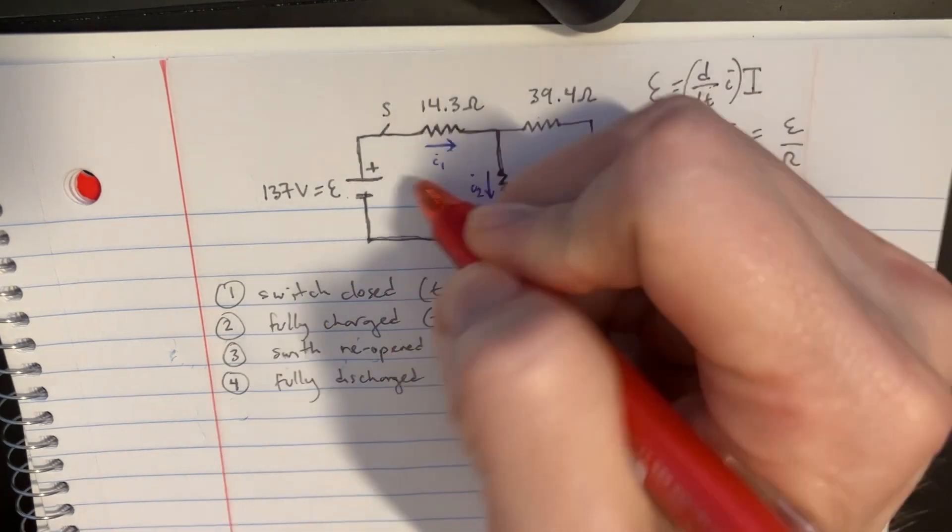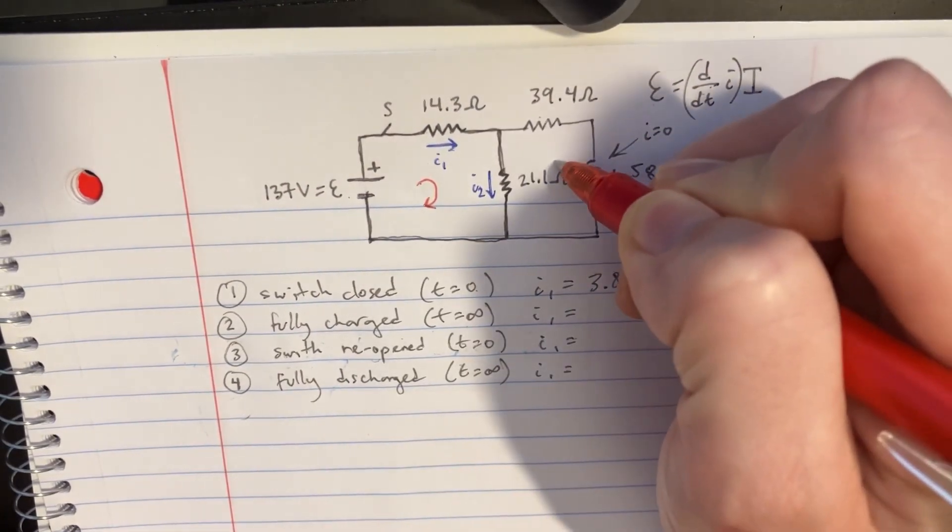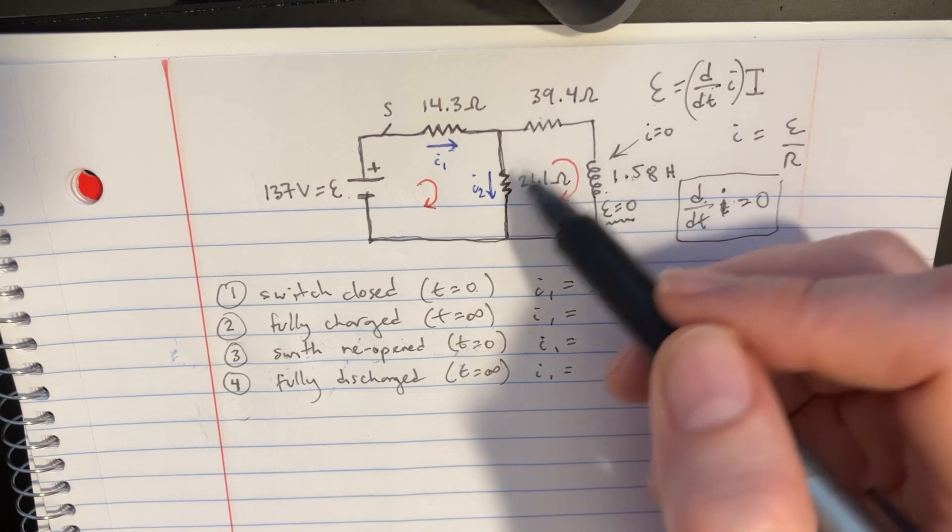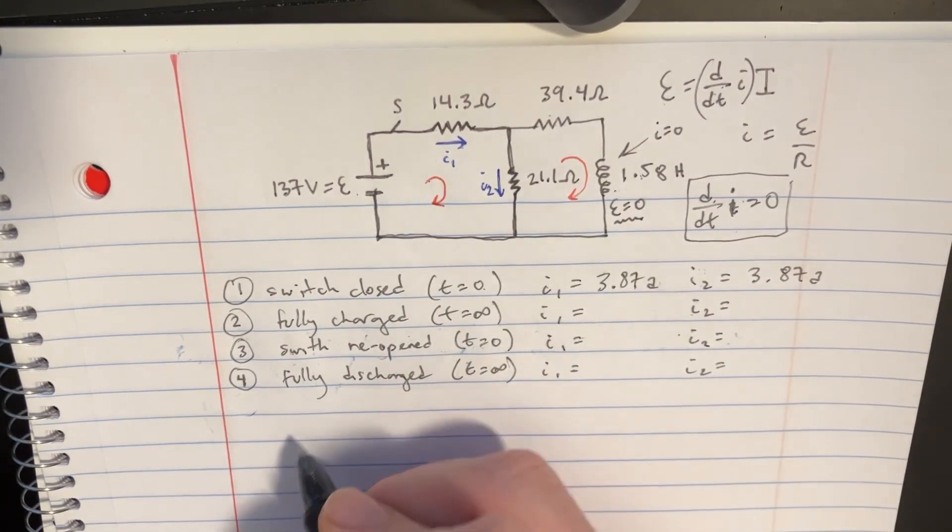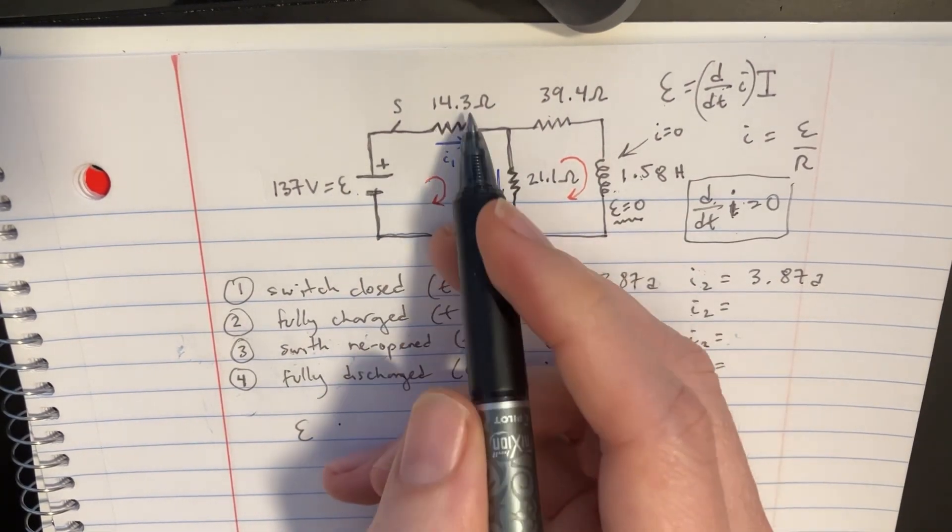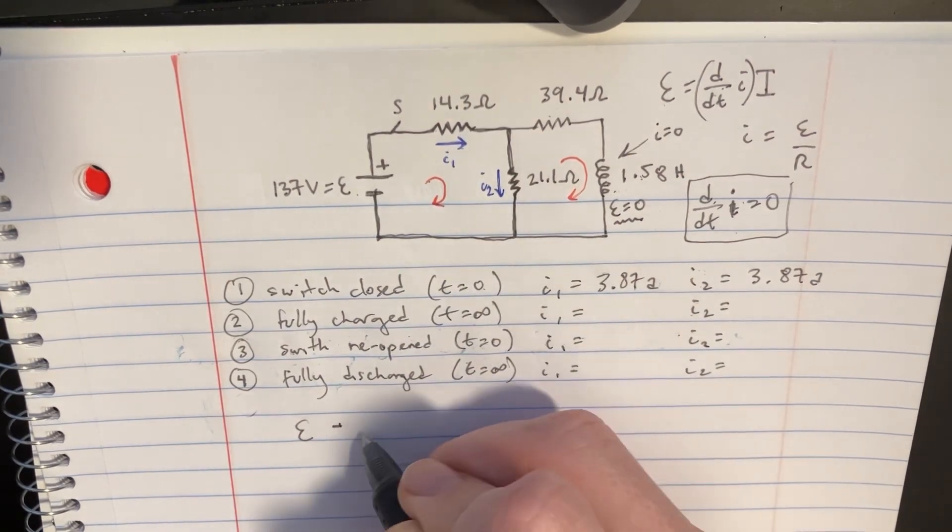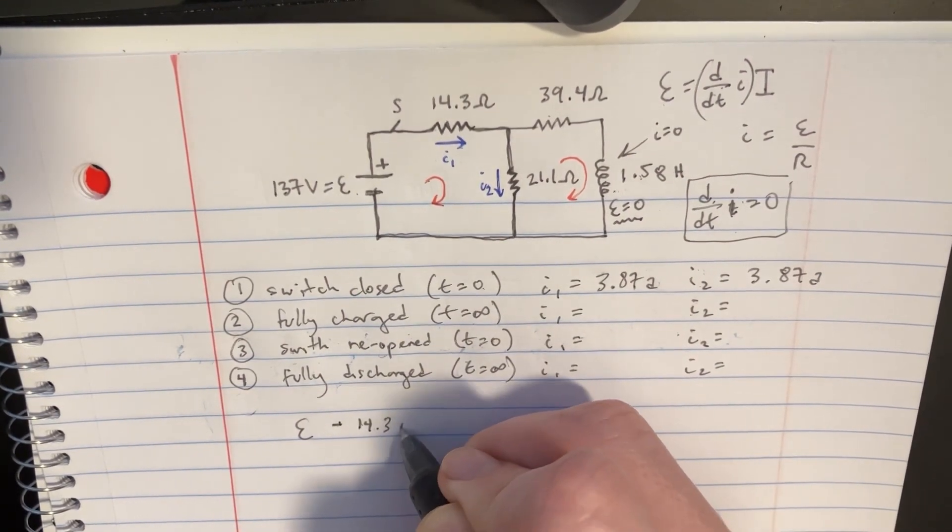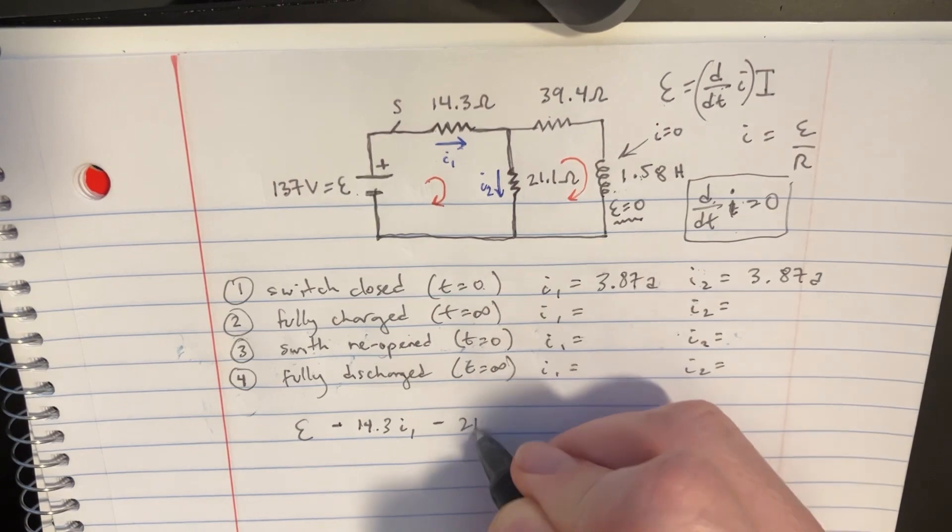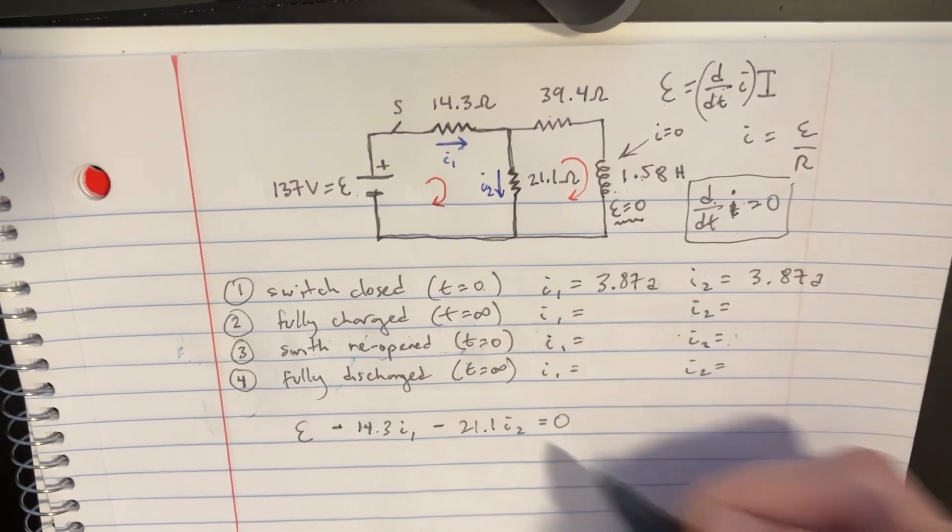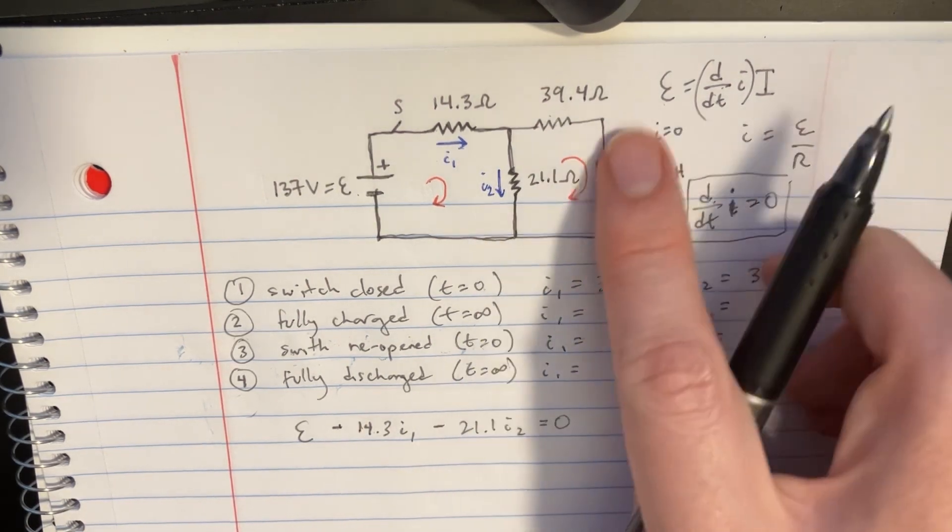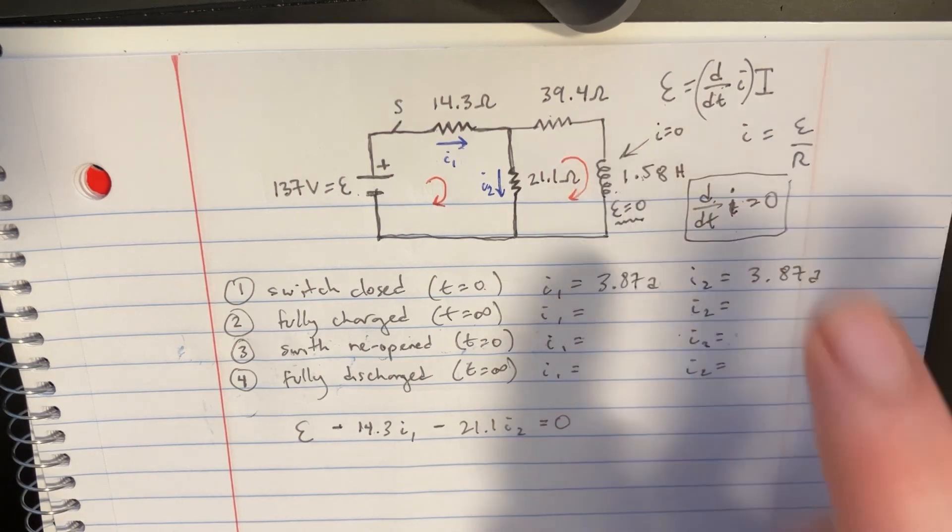So the first Kirchhoff loop would be something like this, and the other one would be something like this. So I'll set up this one first, and we're going to go epsilon starts there. We're going to go this way, and we're going to go IR minus IR. So 14.3 times I1, and then here we're going to subtract the IR again. So 21.1 I2, and that's going to be equal to 0. And then on this side, I know that's going to be equal to 0. That's not even going to be included into my Kirchhoff loop.